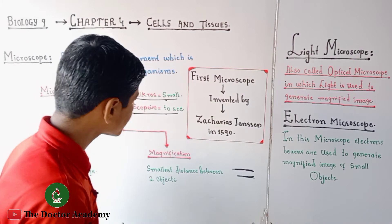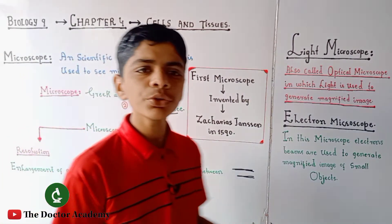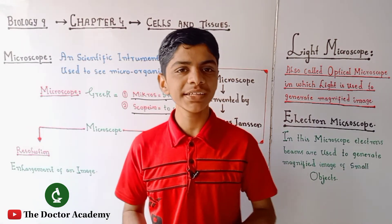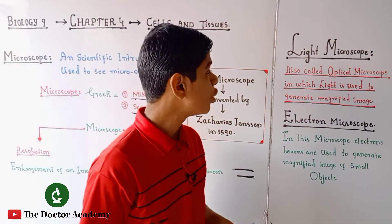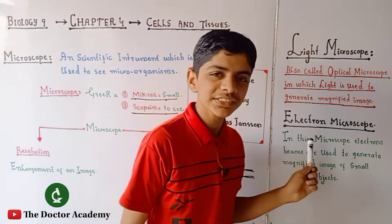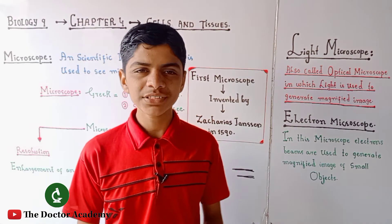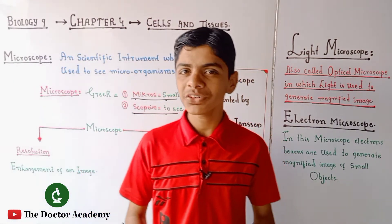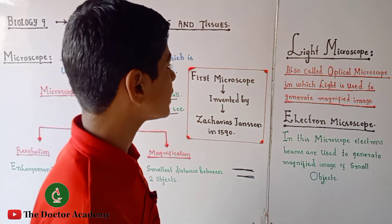When we zoom in using a microscope, that is magnification. Now, microscopes are of two types. The first type is the light microscope, also called the optical microscope. The second type is the electron microscope. Let's now look at what a light microscope or optical microscope is, and what an electron microscope is.